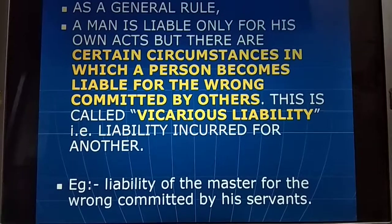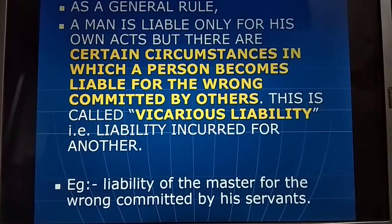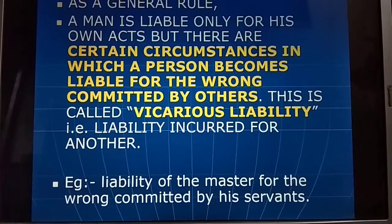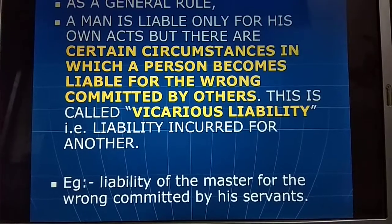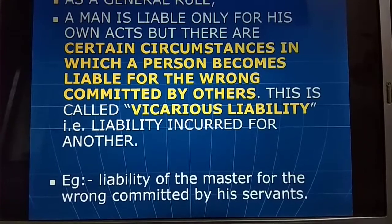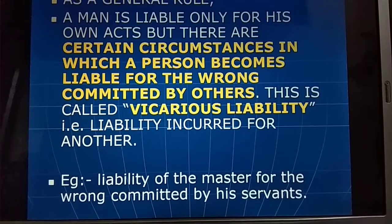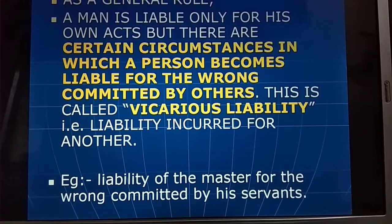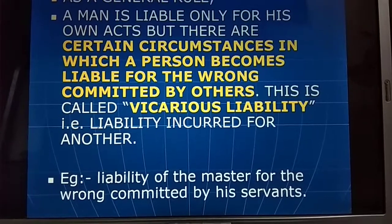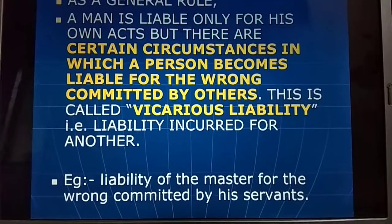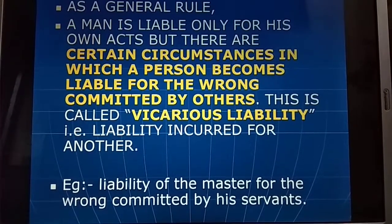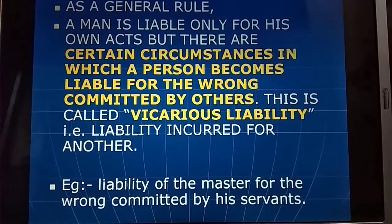As a general rule, a man is liable only for his own act. But there are certain circumstances in which a person becomes liable for the wrong committed by another. This is called vicarious liability. For example, a master will be held liable for the wrong committed by his servant.